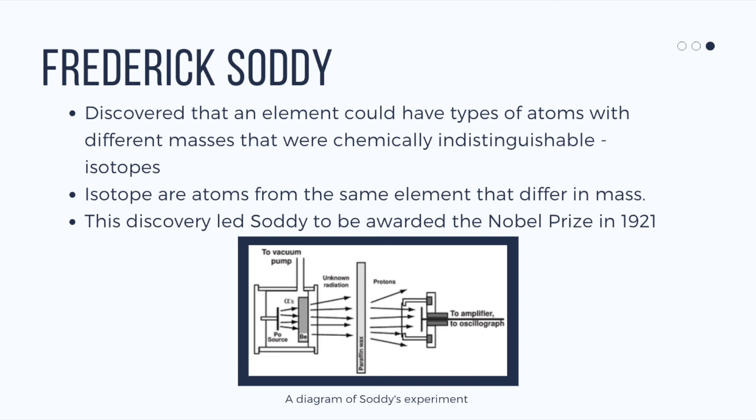So an oxygen that has a mass of 16 has the same identity as an oxygen that has a mass of 17. They're still the same element, but they have different masses. And this is what an isotope is.